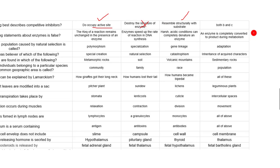Which of the following statement about the enzyme is false? This is the equilibrium constant. Equilibrium constant is not changed. The reaction constant is the same in the presence of enzyme. Yes, that's true. Enzymes speed up the rate of reaction. Harsh acidic conditions can denature the enzyme, so three statements are correct. An enzyme is completely converted to product during metabolism - this is a wrong statement about enzyme.